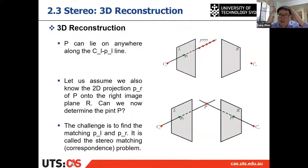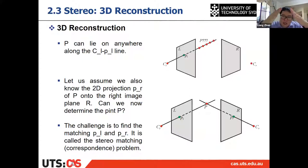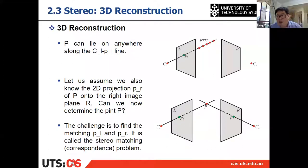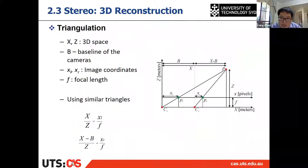That is triangulation. Because you have two images and two corresponding points projected from the same 3D point, you can find the intersection — and that is the 3D point we want. We call this 3D reconstruction. Here we give the derivation of the triangulation.